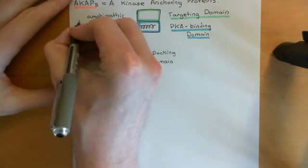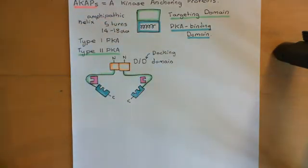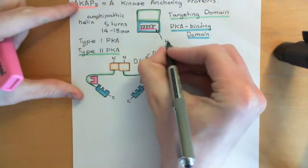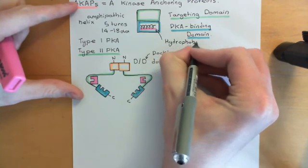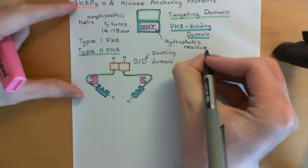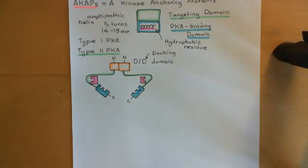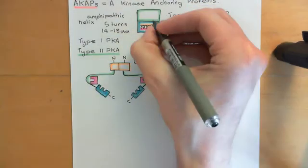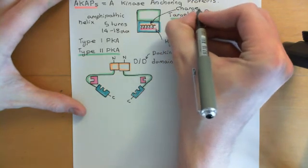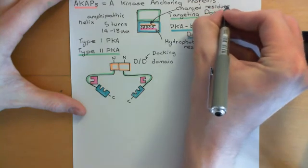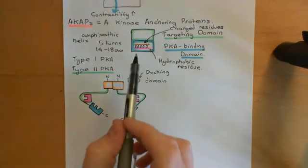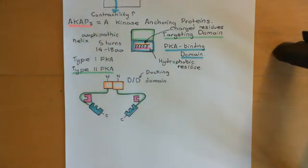This amphipathic helix is very extreme in its nature. On one side of the helix it has hydrophobic residues — big, non-polar residues with no polar bonds. On the other side of the helix you have the complete opposite: charged residues that interact with water fantastically. It's the hydrophobic residue side that is going to actually interact with the dimerized dimerization and docking domains.